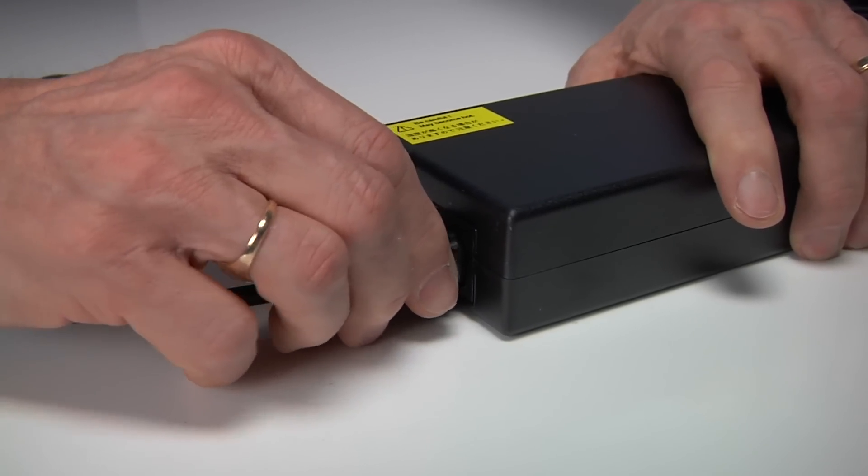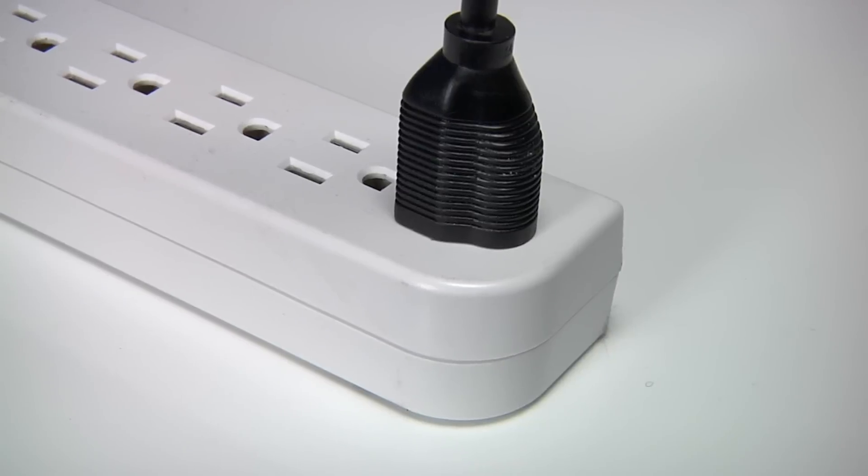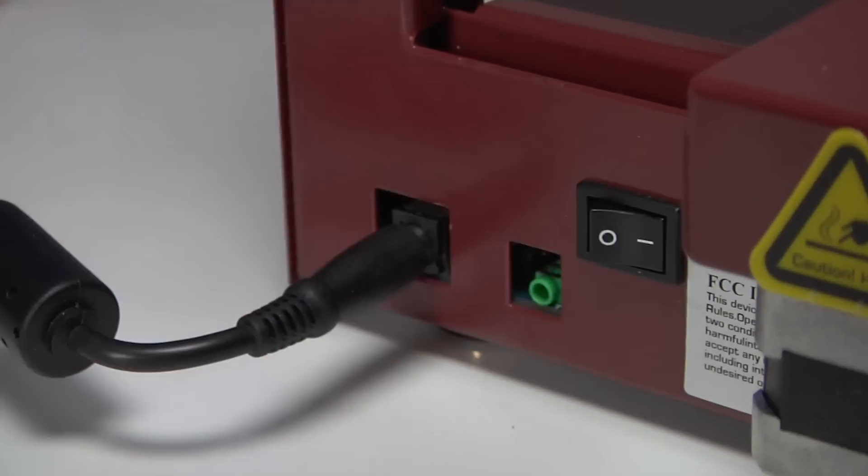Connect the power cable to the power supply and plug the power cable into a 110 volt outlet. Plug the power adapter into your printer and turn on the power switch.